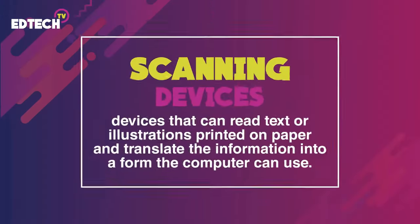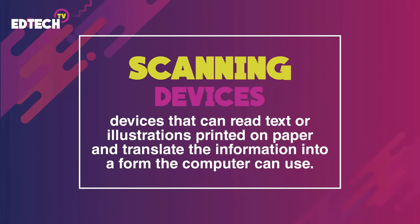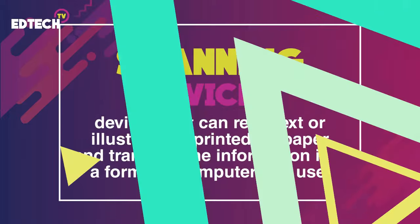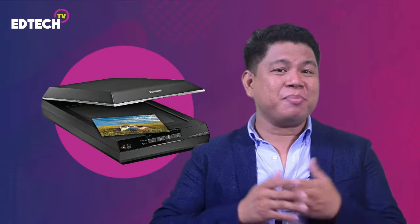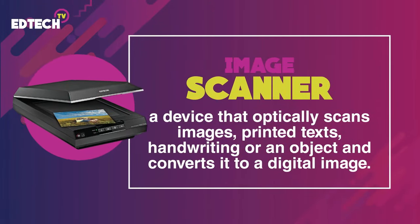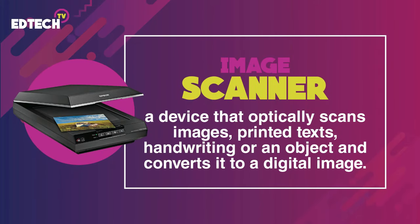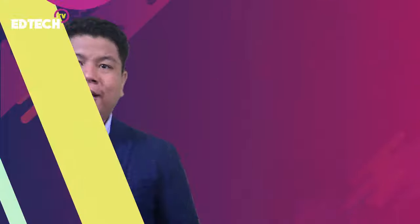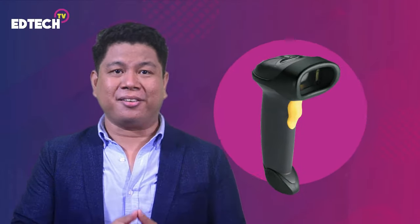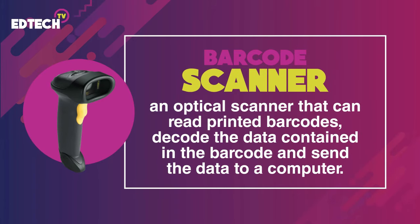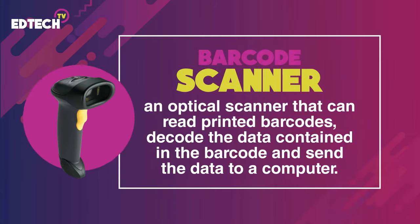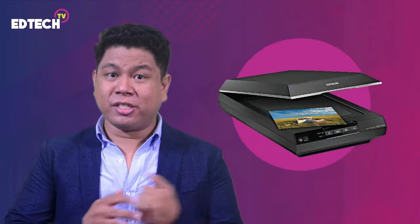We will now move on to scanning devices. These are devices that can read text or illustrations printed on paper and translate the information into a form the computer can use. A scanner or image scanner is the most popular example. It is a device that optically scans images, printed texts, handwriting, or an object, and converts it to a digital image. Commonly used in offices are variations of the desktop flatbed scanner, where the document is placed on a glass window for scanning. Another example is a barcode reader or barcode scanner. It is an optical scanner that can read printed barcodes, decode the data contained in the barcode, and send the data to a computer. Those are the scanning devices: the image scanner and the barcode scanner.